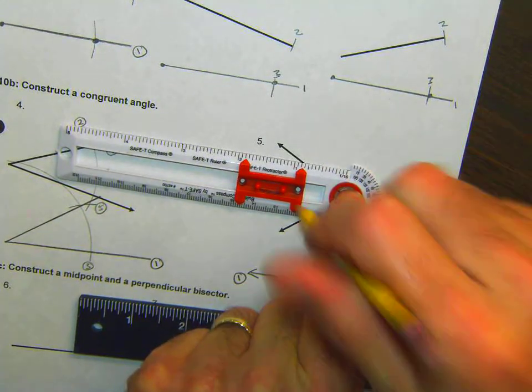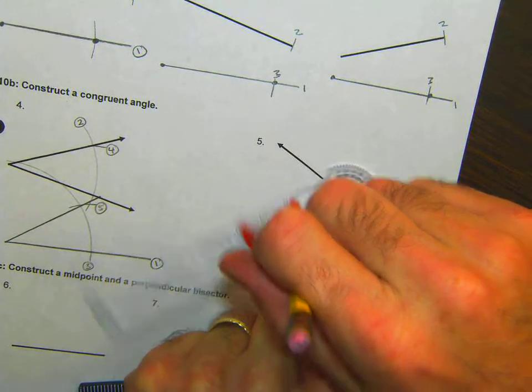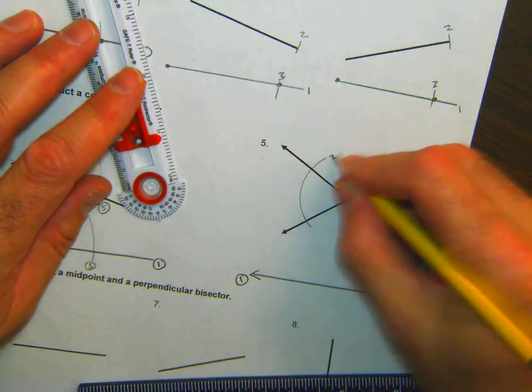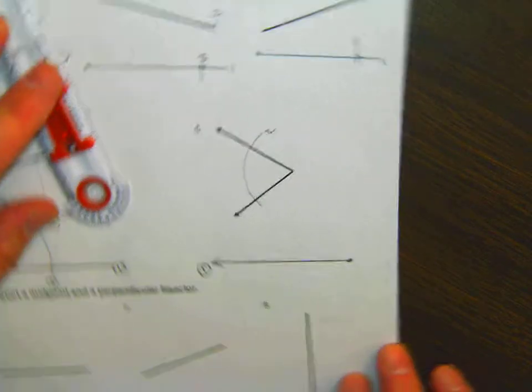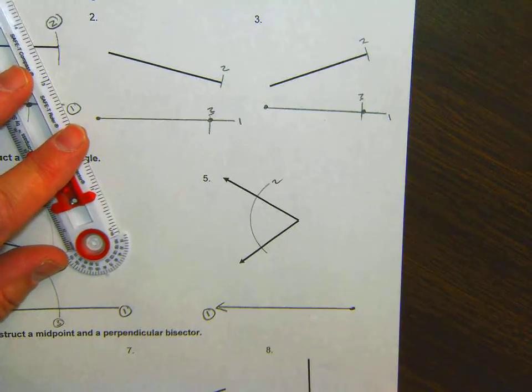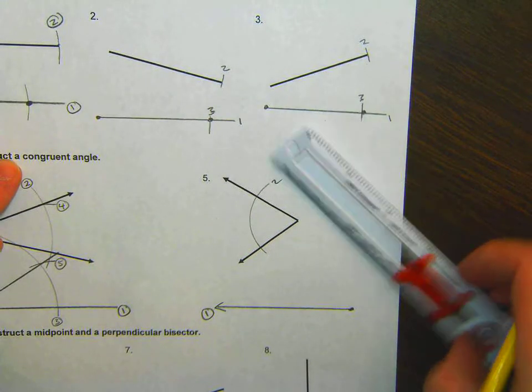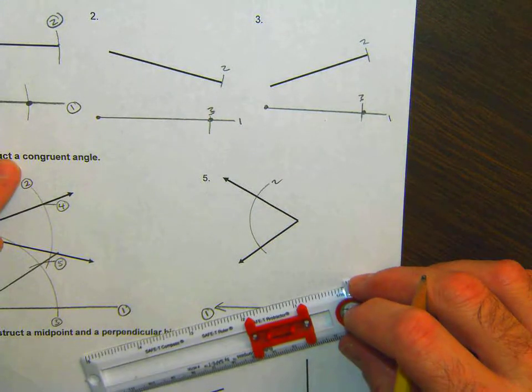The angle. That's my second. And then once I have that, I need to do the same thing across the ray.